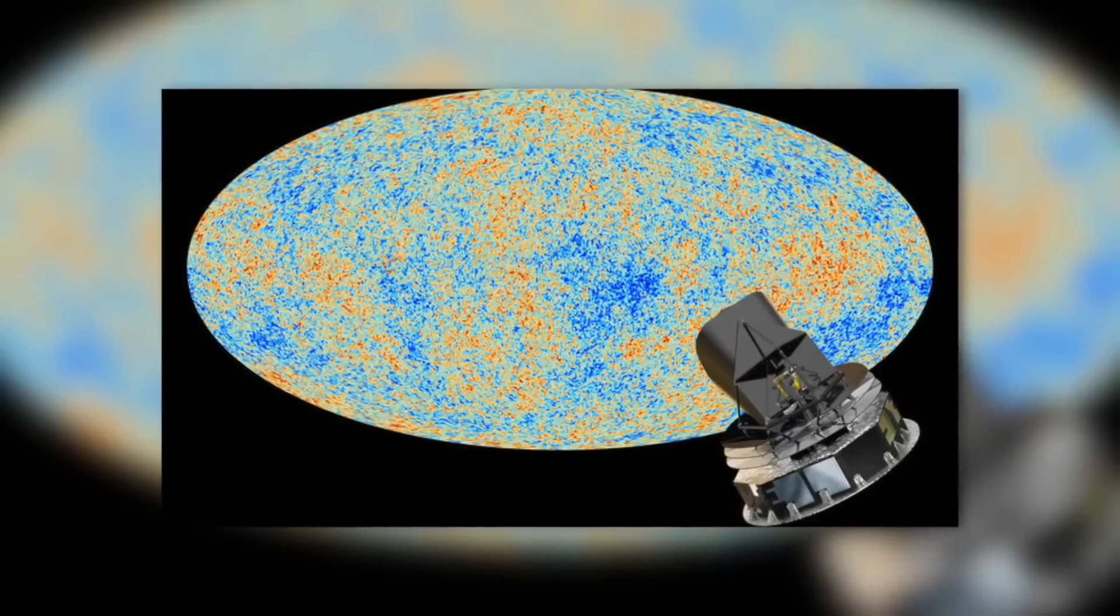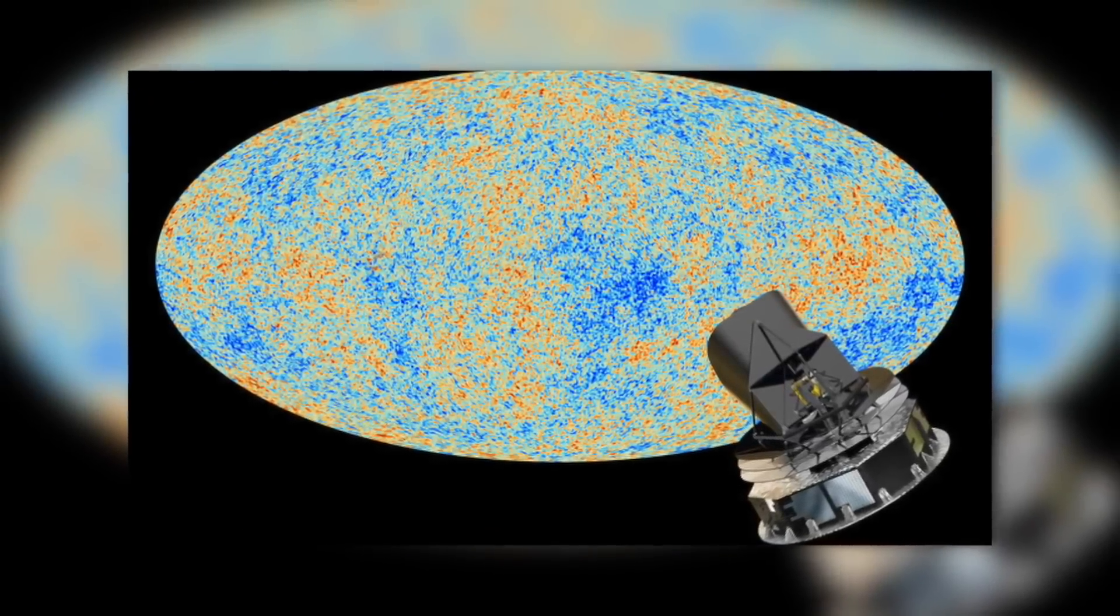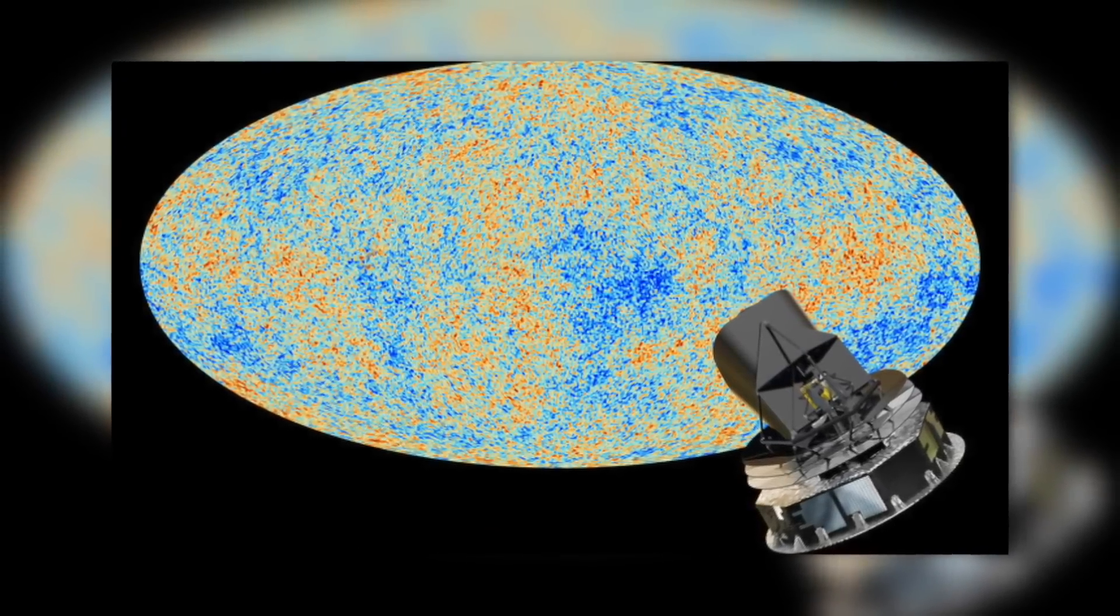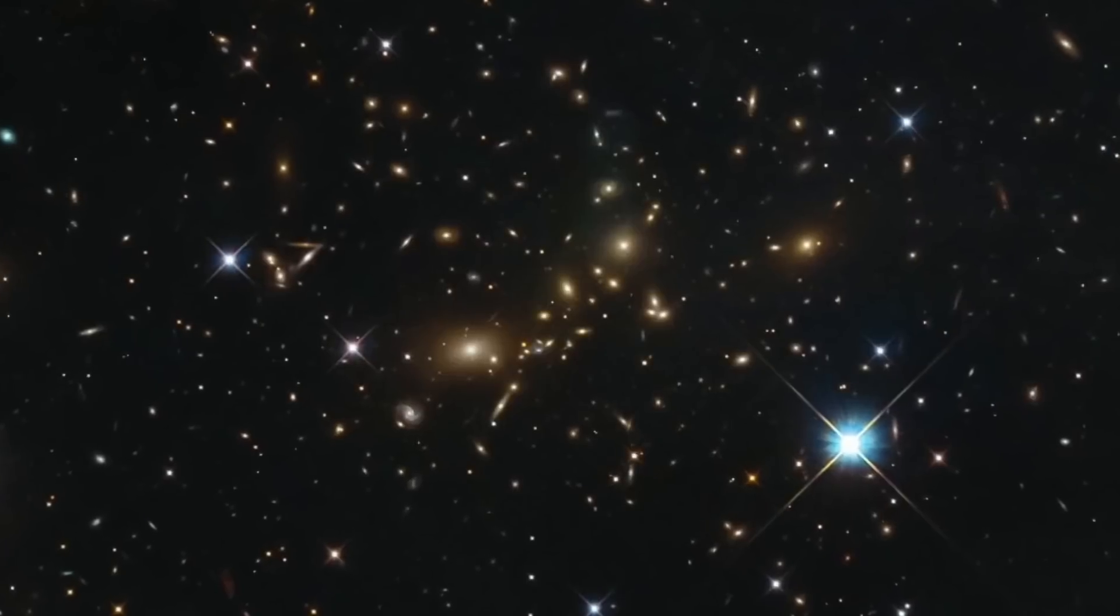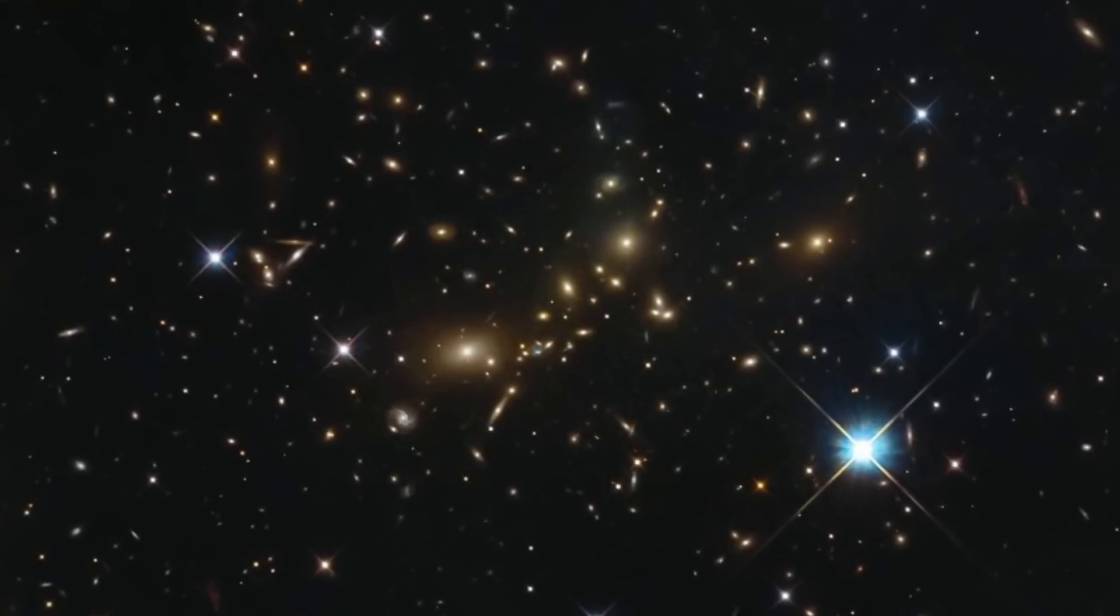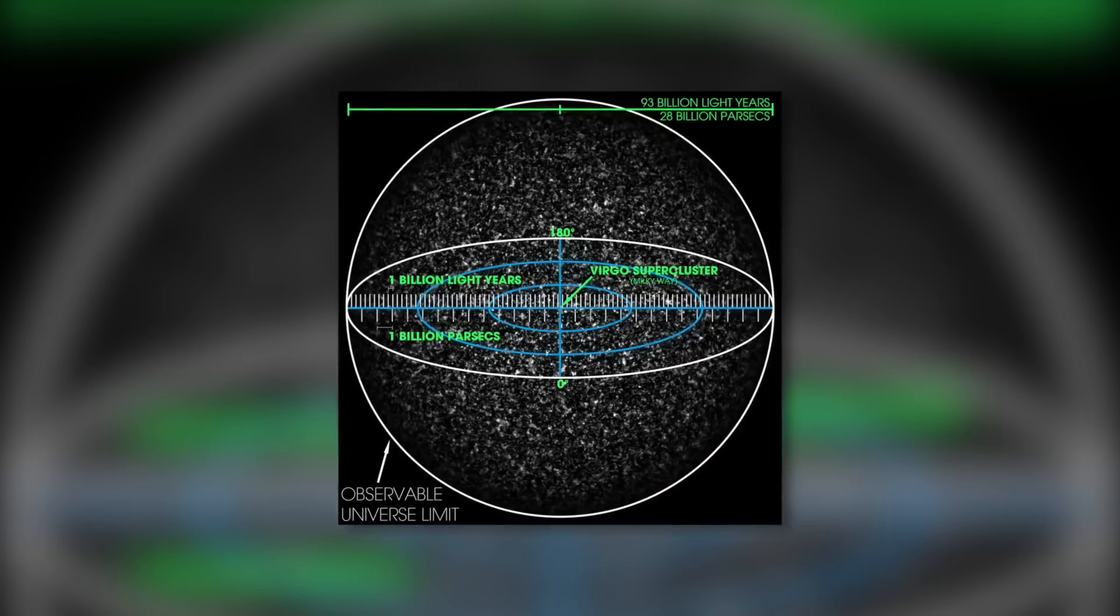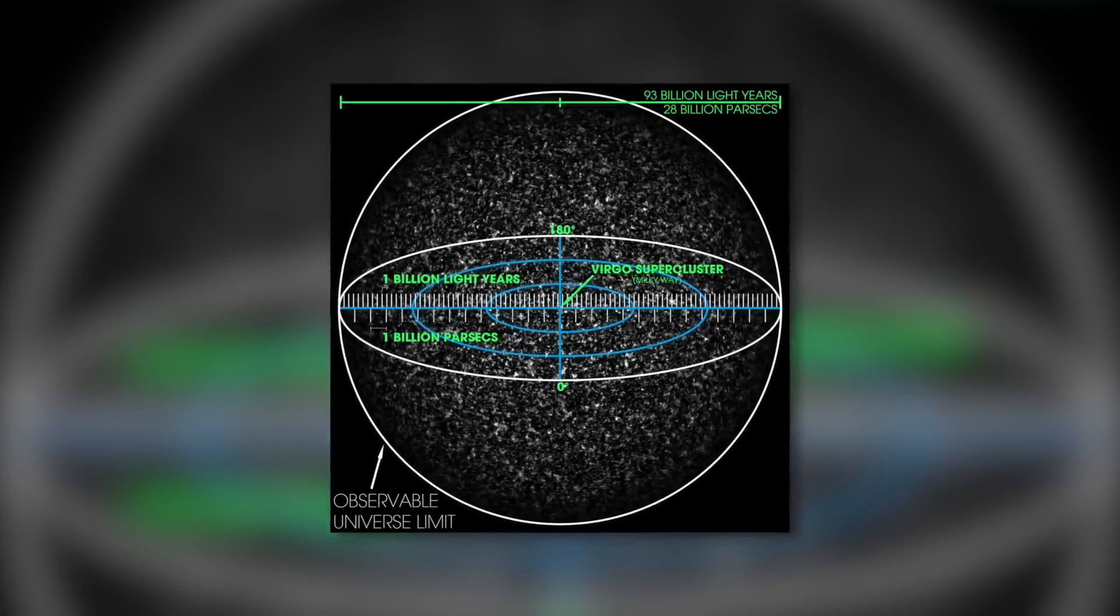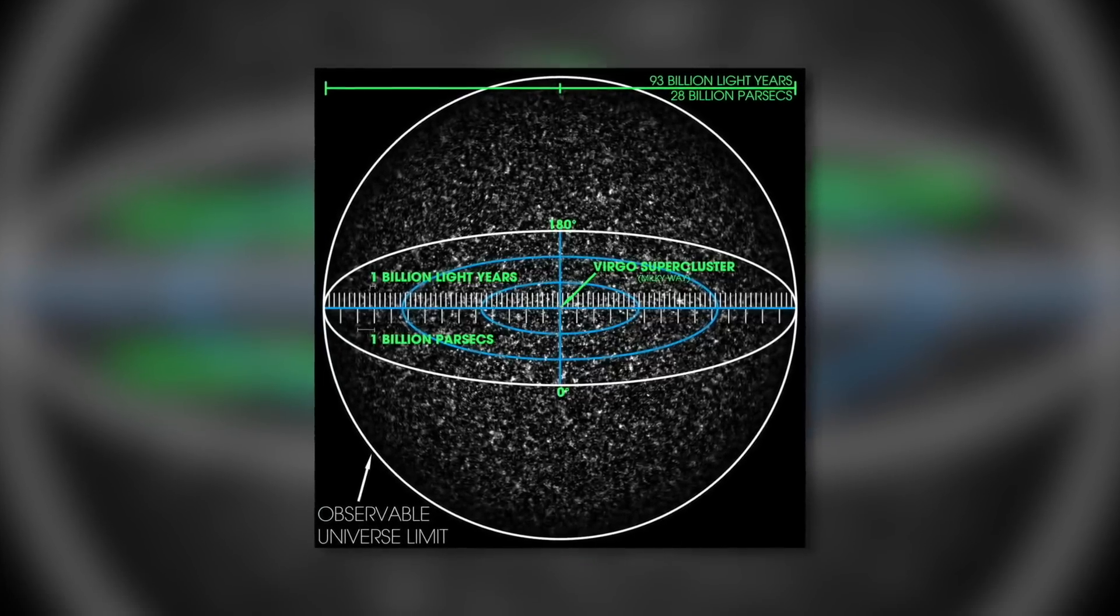They compared these clusters with the map of the CMB taken by NASA's Wilkinson Microwave Anisotropy Probe, WMAP, satellite. The motion of the clusters defies all predictions about the distribution of mass in the universe after the Big Bang. One possible cause: massive structures outside the Hubble volume that exert a gravitational influence. Scientists are almost certain that the source of the suction lies outside our known universe.